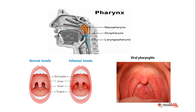The soft palate, which is the roof of the mouth, can also be inflamed in some cases of pharyngitis. When you look at a person with viral pharyngitis, you can actually see the pharynx showing these reddish structures, which indicate the inflammation of the pharynx.